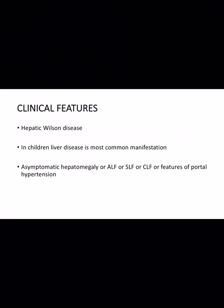Clinical features include hepatic Wilson disease. In children, liver disease is the most common manifestation. It may present as asymptomatic hepatomegaly, acute liver failure, subacute liver failure, chronic liver failure, or features of portal hypertension in the form of ascites, variceal bleed, or splenomegaly.